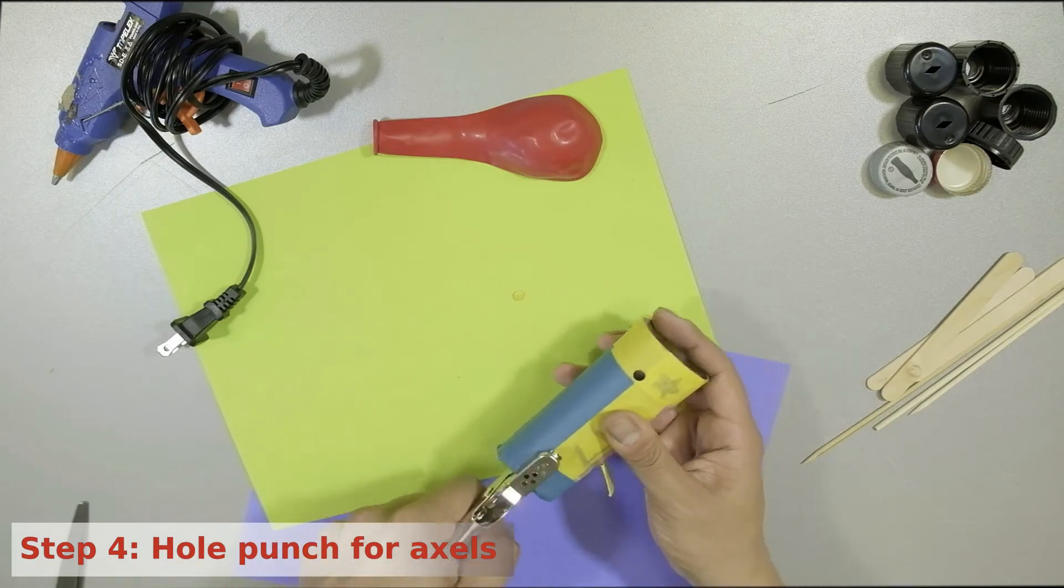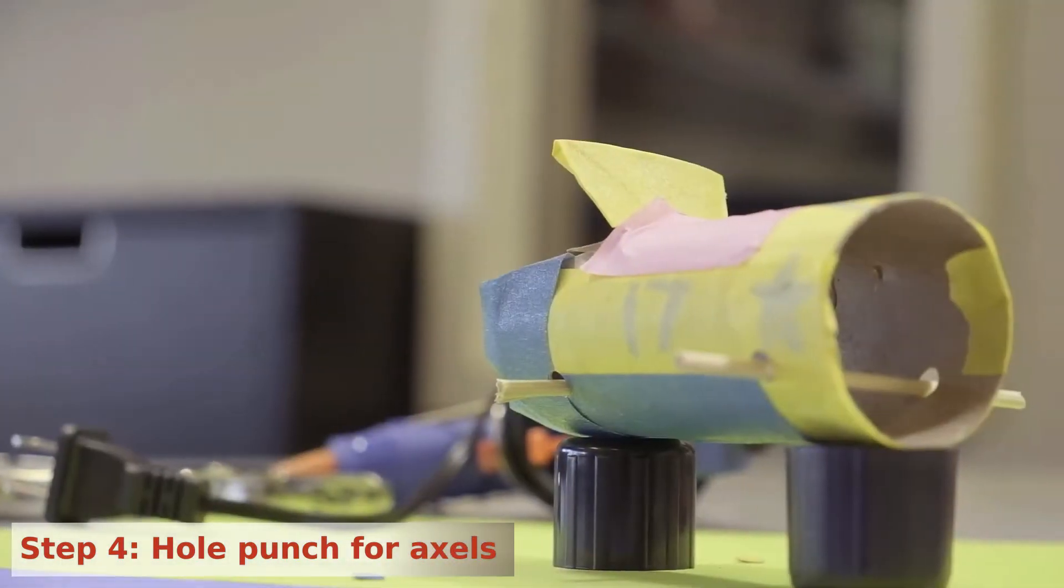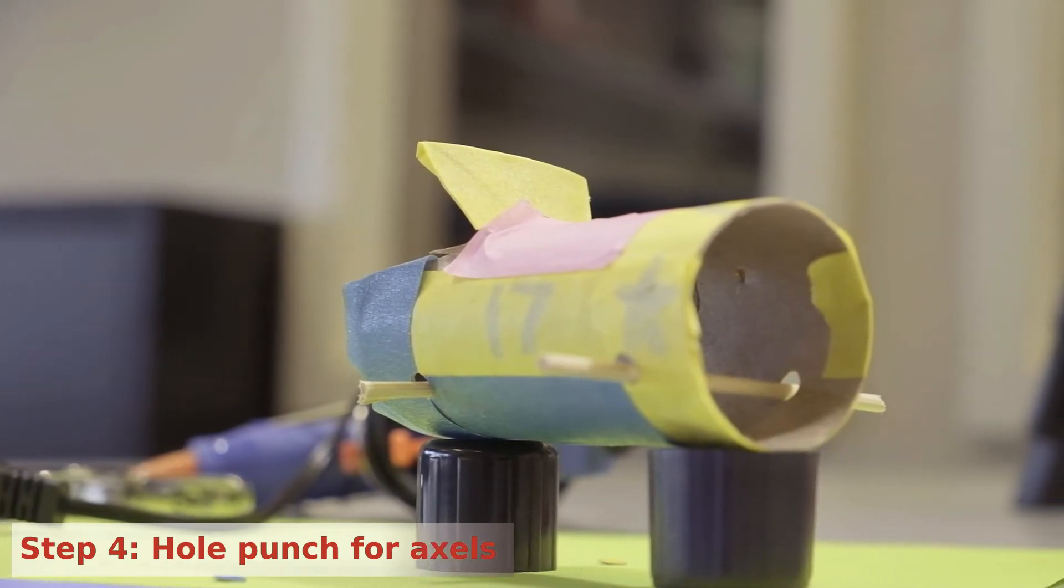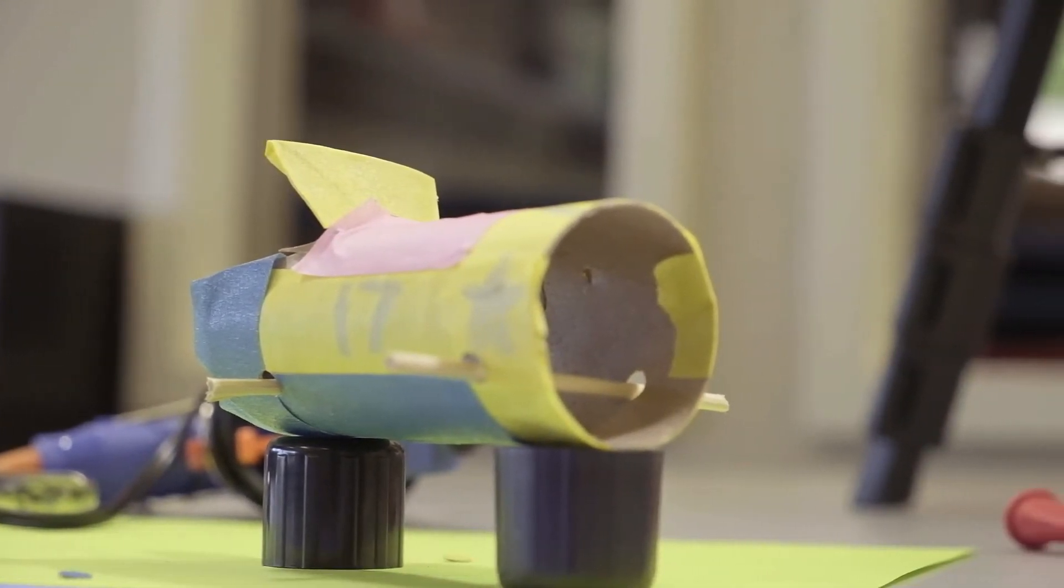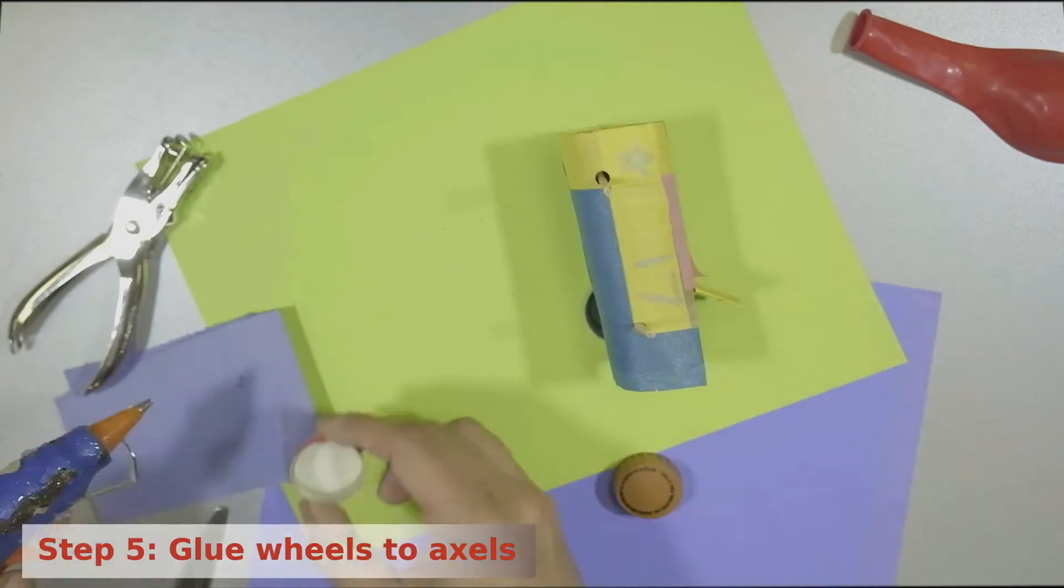Here's a note. Depending on the size of the wheels, each axle should sit low enough in the tube to allow the wheels to touch the ground once they're attached. Now you can insert the axles through the holes in the tube.